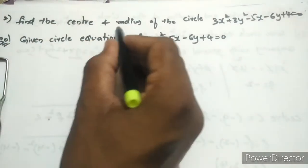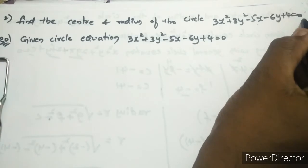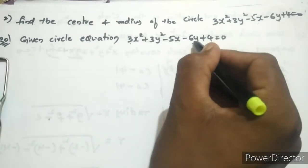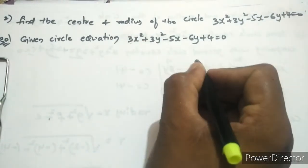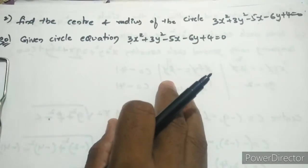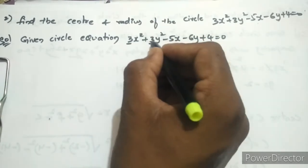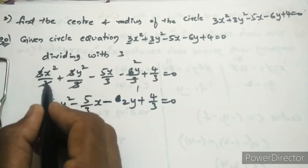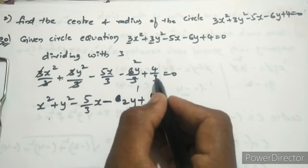The next problem: find the center and radius of the circle 3x² + 3y² - 5x - 6y + 4 = 0. The general circle equation requires the coefficient of x² and y² to be 1, but here both coefficients are 3. So we first divide the entire equation by 3, giving x² + y² - (5/3)x - 2y + 4/3 = 0.